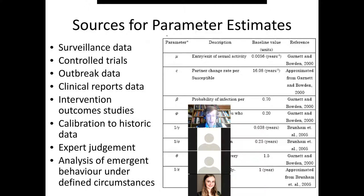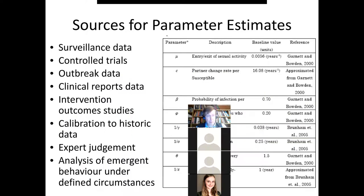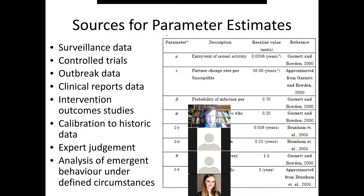As data buzzards we often need to go find estimates for our parameters. There are many places we can go: surveillance data, large scale survey instrument results, outcome studies, outbreak data, reporting data from the health system. If we're lucky, someone's done a meta-analysis or systematic review. Sometimes we turn to system practitioners for expert judgment.